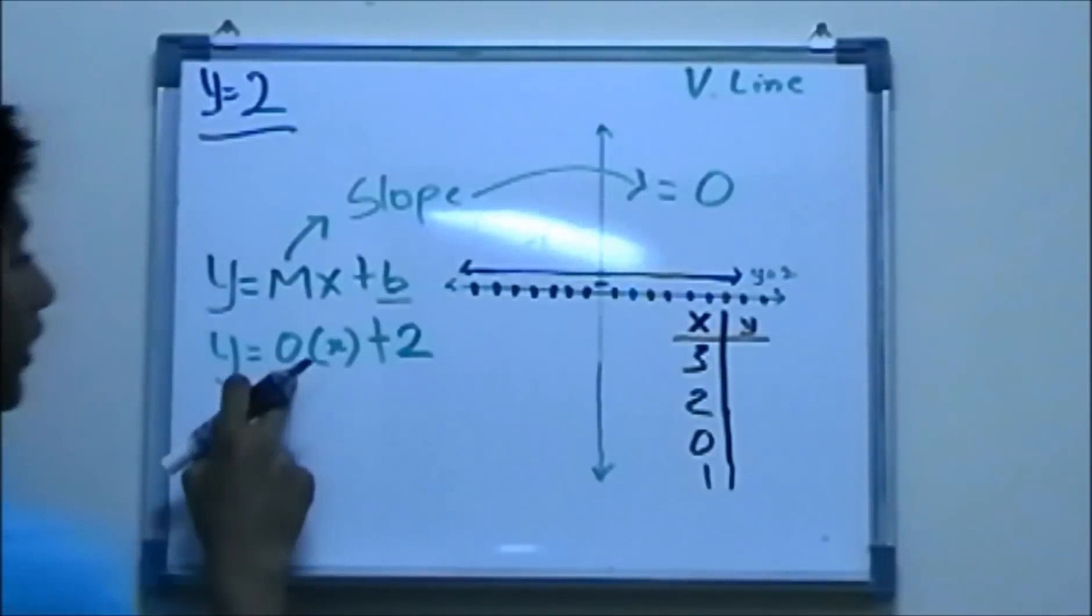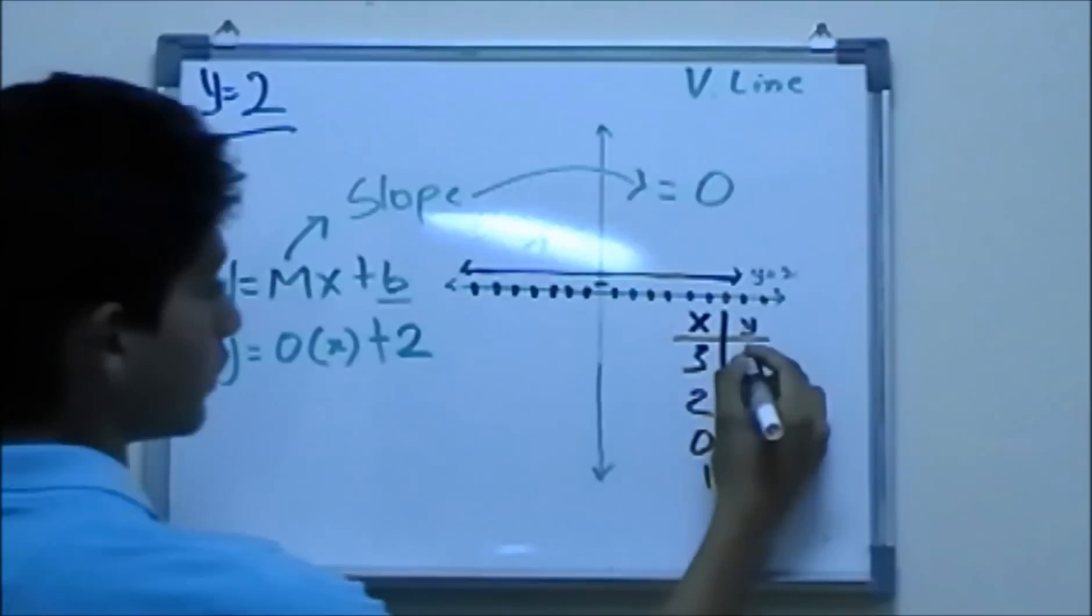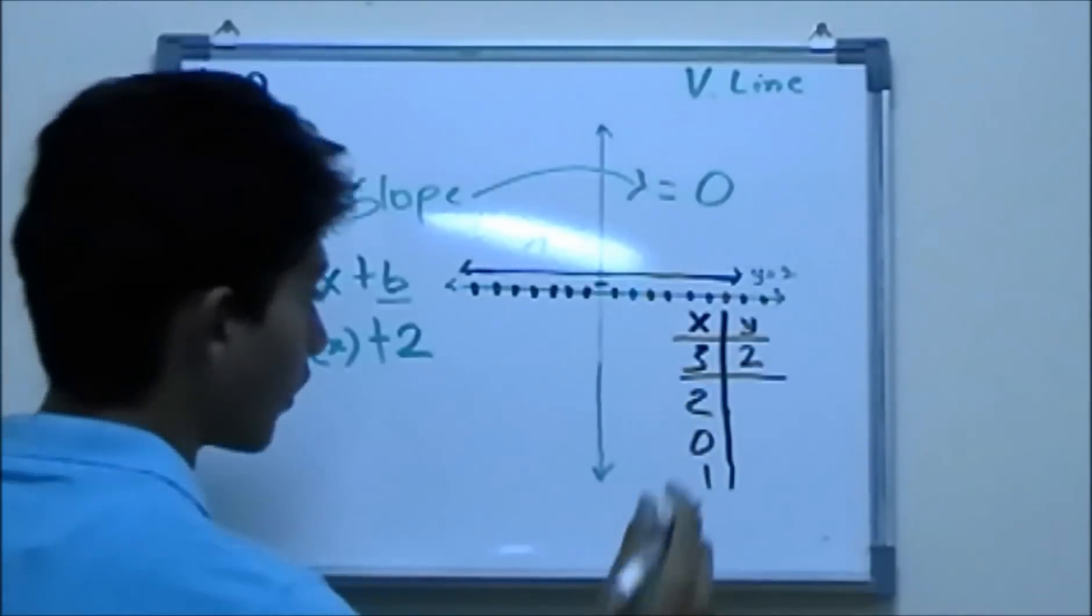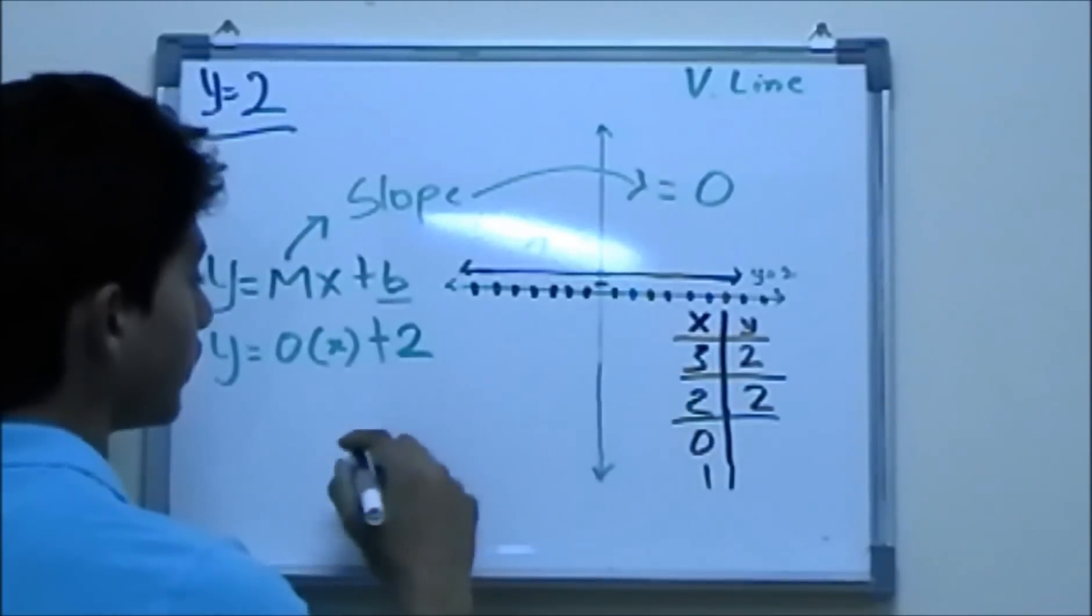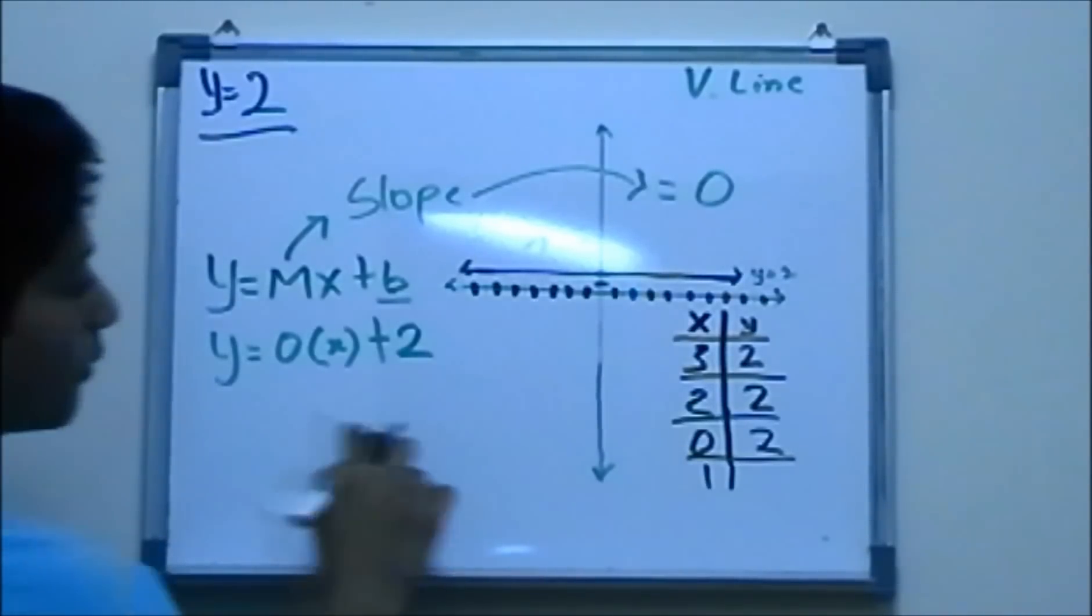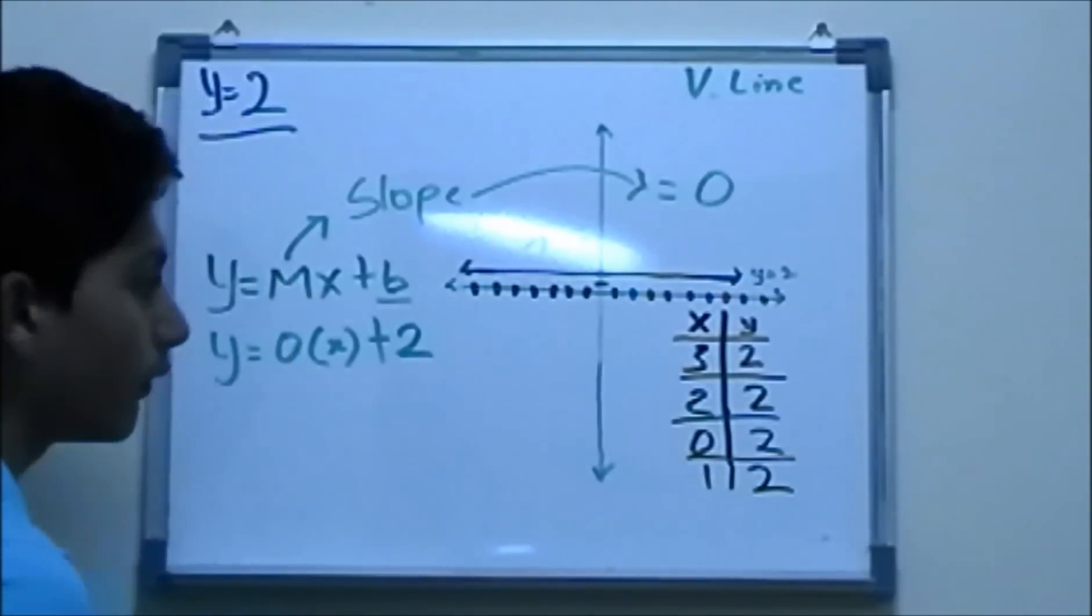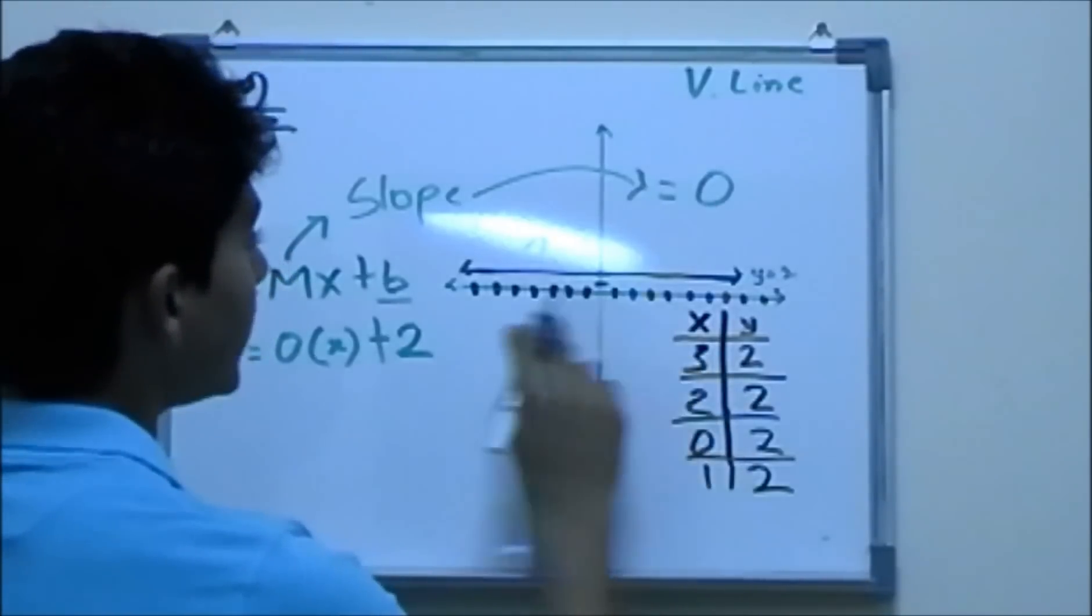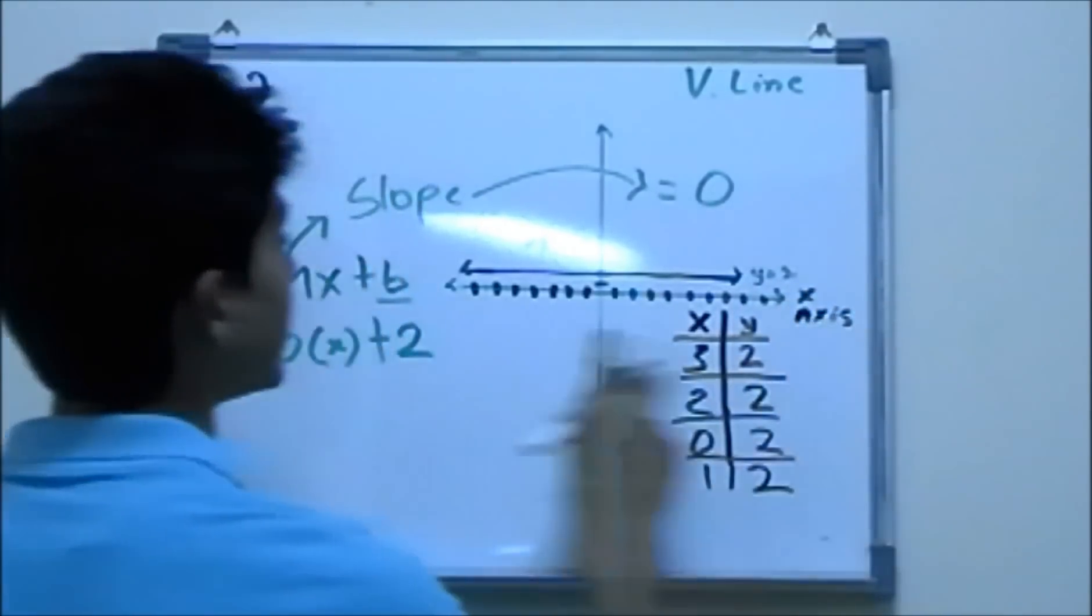So we have three here. Any number multiplied by zero is always equal to zero. So we have zero plus two which makes it two. Two times zero is zero, zero plus two is two. Zero times zero is zero, zero plus two is two. One times zero is zero, zero plus two is two. So you see, for any x value on the x-axis, the y is always equal to two.